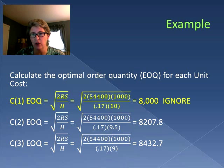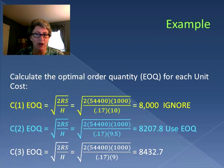The second one of 8207.8 actually falls within the range for the quantity of between five and ten thousand units, so we will use that EOQ when we calculate the total cost.